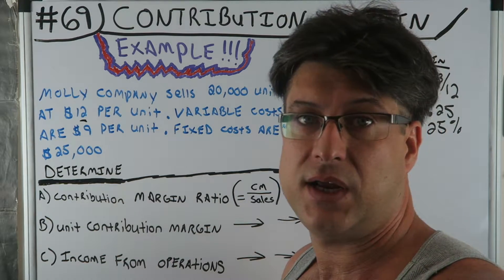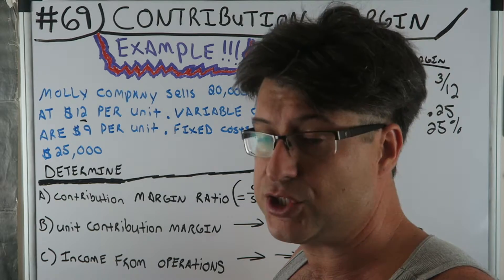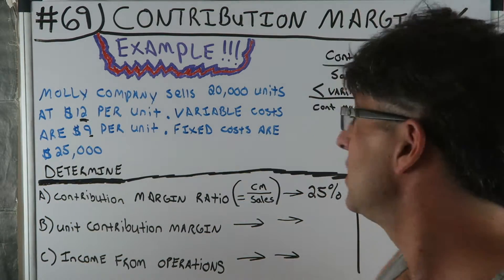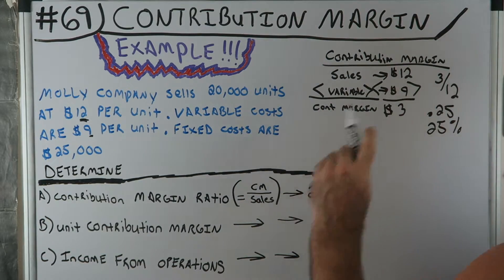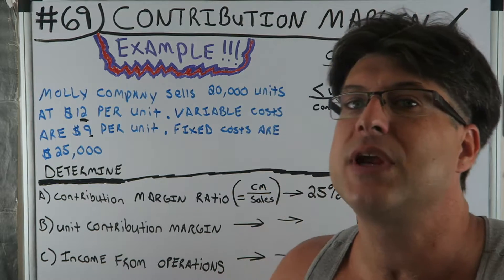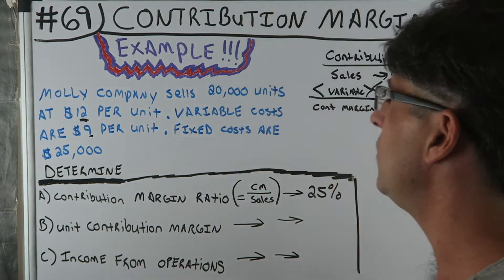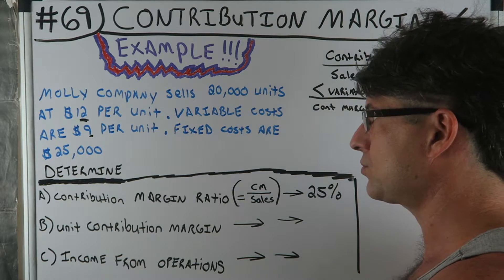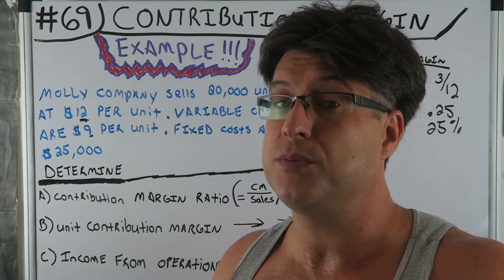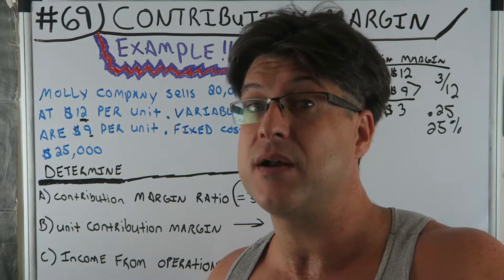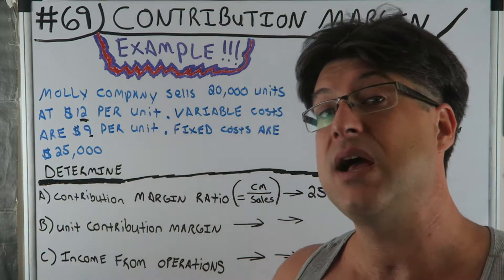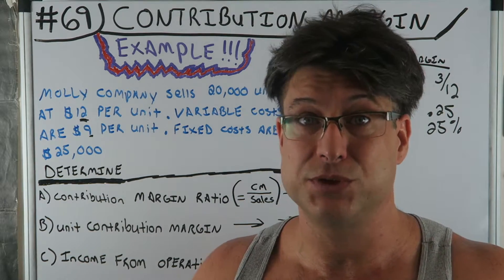25% means three out of every $12 coming in is profit before fixed costs. Every time you sell, you get $12 in, but $9 goes to variable costs, so $3 — or 25% — is your contribution margin. If variable costs were higher, like $11, the ratio would be much lower. If variable costs were $6, you'd have a 50% contribution margin ratio.